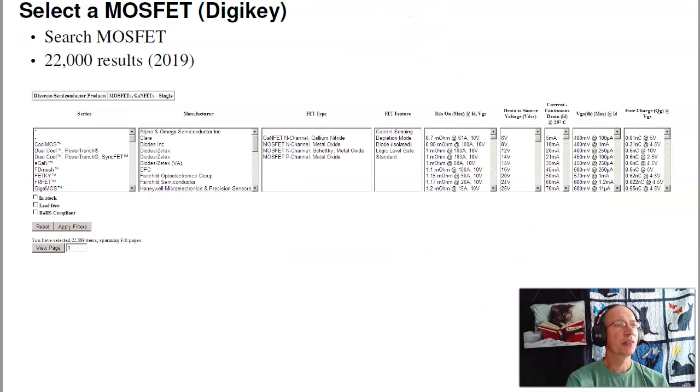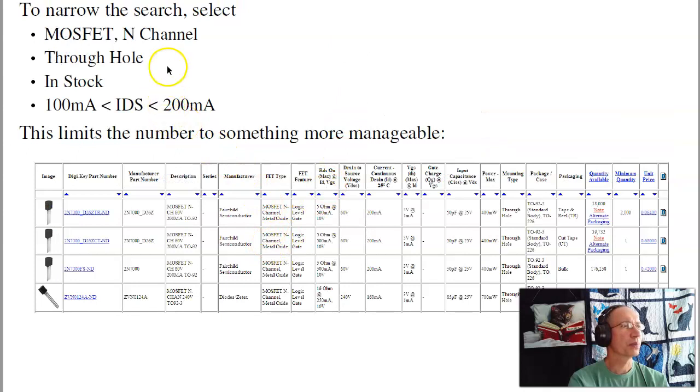So the first step is pick your favorite MOSFET. If you go to DigiKey, they've got 22,000 results in 2019. The last lecture, there were 50 or 91,000 different MOSFETs as of 2020. What I'm looking for is a MOSFET that can handle 20 milliamps and 5 volts. So picking one, n-channel, through-hole, in-stock, currents up to 200 milliamps, I get a more manageable list.